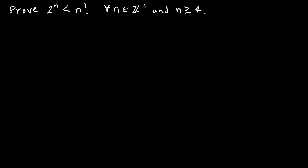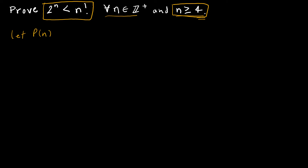Let's look at one more proof of an inequality. You may hate these, and I totally understand. We're trying to prove that 2 to the n is less than n factorial for all n that are integers greater than or equal to 4. That's going to come into play with the basis step, because the lowest value is 4. So I'm going to start by letting p of n represent that 2 to the n is less than n factorial. Then I'll do my basis step — the least value is p of 4.